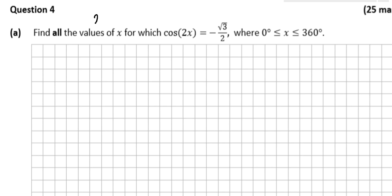In this question we're looking at the 2018 Leaving Cert Higher Level Paper 2 Question 4. It says find all the values of x for which cos(2x) is equal to minus root 3 over 2.